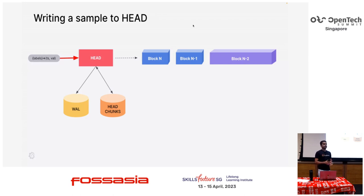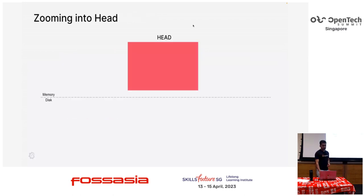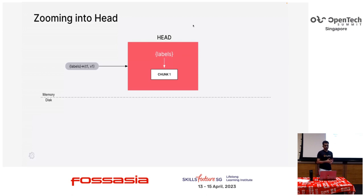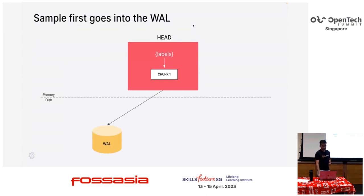Let's first look at writing a sample inside the head block. Here is the head block — there is nothing inside right now. We get one sample and we create an index entry for this particular set of labels, called a time series. A chunk is a compressed set of samples — in Prometheus we use something called Gorilla compression by Facebook. Every time you get a sample, you compress it in flight and store it there instead of storing raw samples. But before we put a sample into the TSDB, we first create the series entry in the index, then write into something called the write-ahead log.